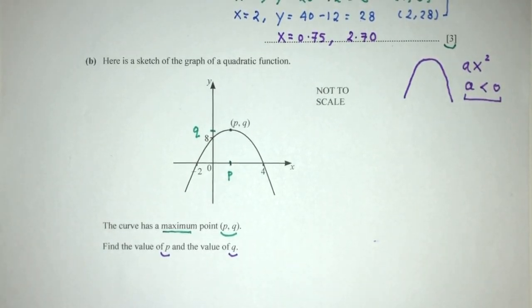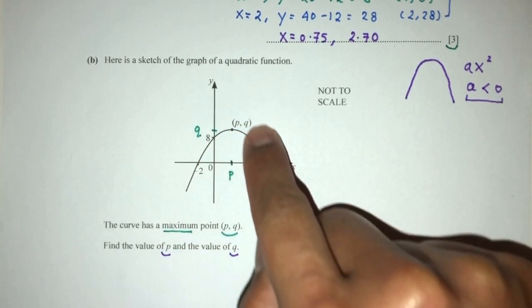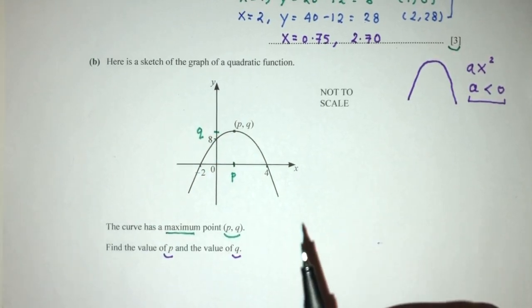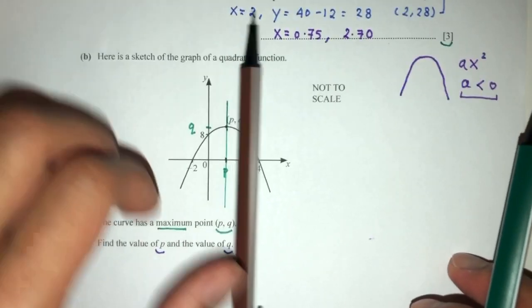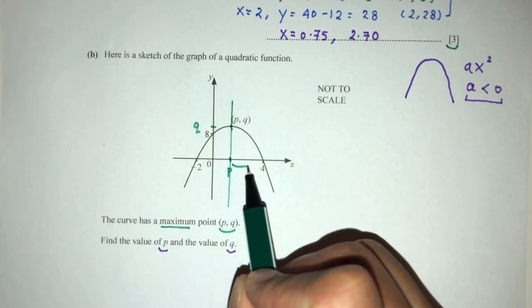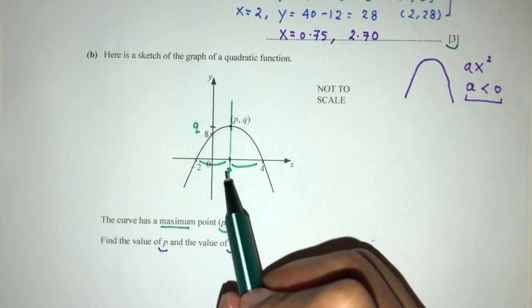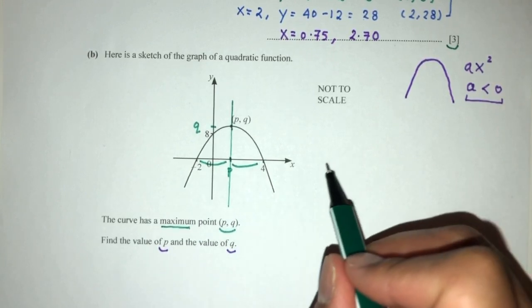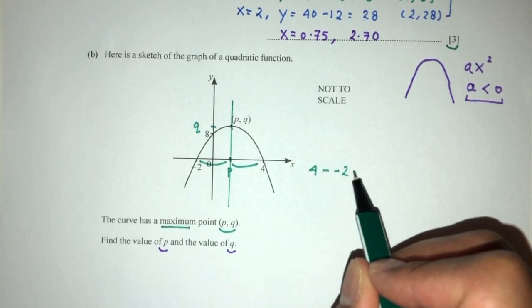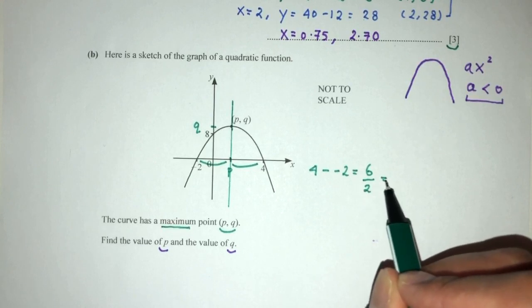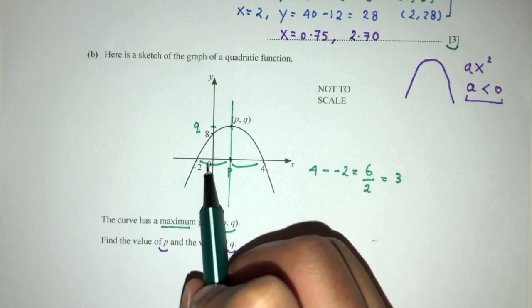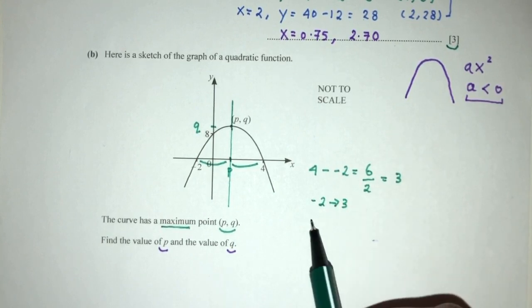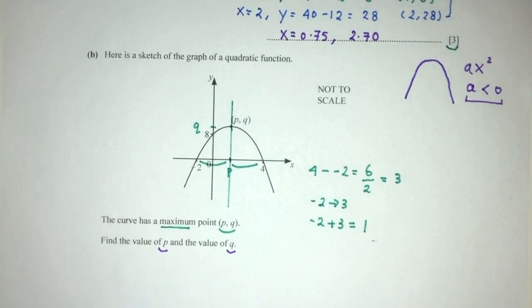To find P: this is a maximum curve, and it should be symmetric about its maximum point. So this distance must equal that distance, meaning P is the midpoint of x = -2 and x = 4. The total distance is 4 - (-2) = 6, and half of that is 3. Starting from -2 and moving 3 to the right gives -2 + 3 = 1. So P = 1.